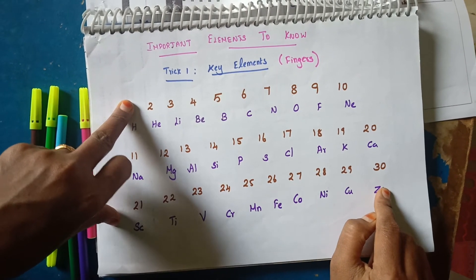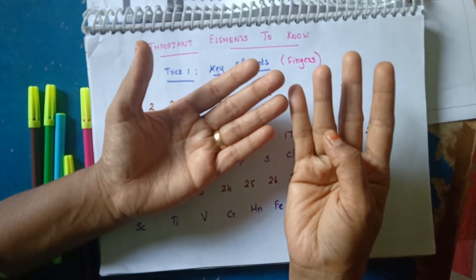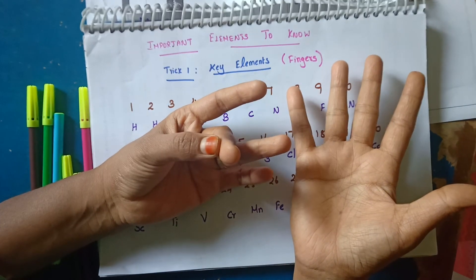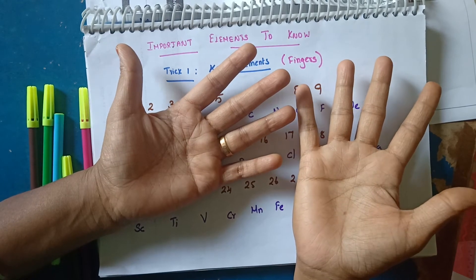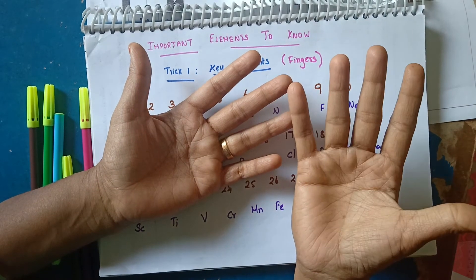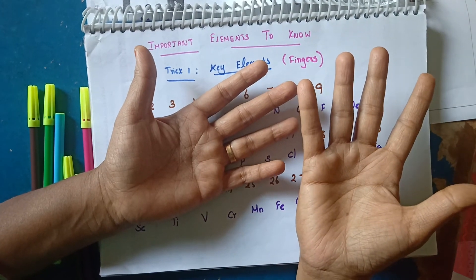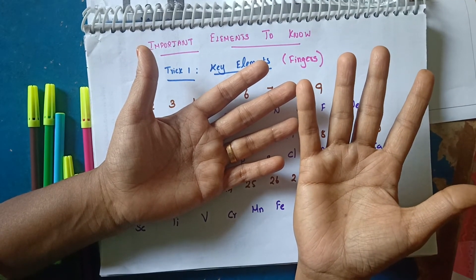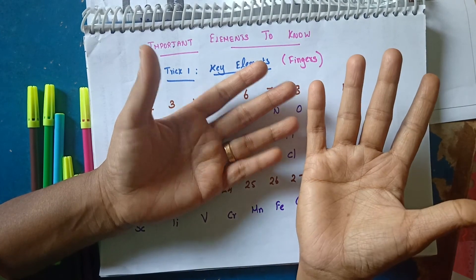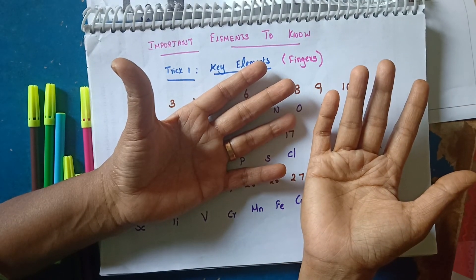Let's start with 1 to 30 elements fresh. Hydrogen, Helium, Lithium, Beryllium, Boron, Carbon, Nitrogen, Oxygen, Fluorine, Neon — 1 to 10. Sodium, Magnesium, Aluminium, Silicon, Phosphorus, Sulfur, Chlorine, Argon, Potassium, Calcium — 11 to 20. Next 21: Scandium, Titanium, Vanadium, Chromium, Manganese, Iron, Cobalt, Nickel, Copper, Zinc.